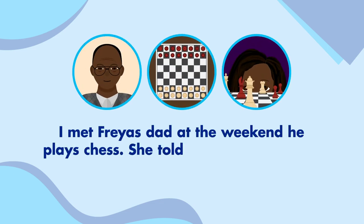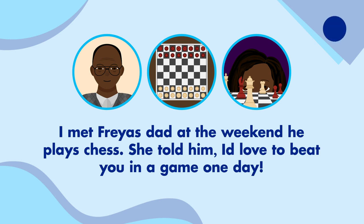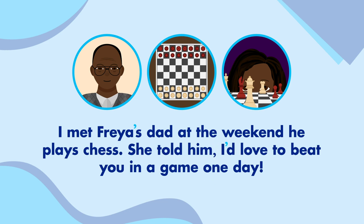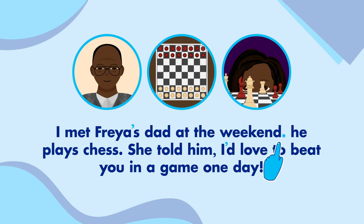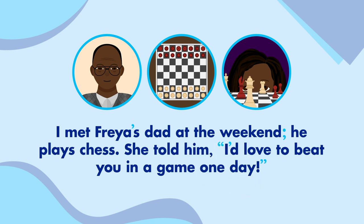Let's write out one more sentence. 'I met Freya's dad at the weekend, he plays chess. She told him, I'd love to beat you in a game one day.' We need an apostrophe in 'Freya's' because it shows the dad belongs to Freya, and one in 'I'd' because it's a contraction of 'I would'. The first sentence needs a pause after 'weekend', so let's link them with a semicolon. Finally, the last bit of the second sentence is spoken by Freya, so let's put speech marks around it. Great, that looks perfect!